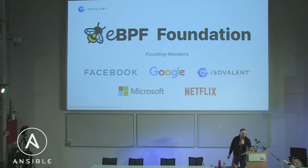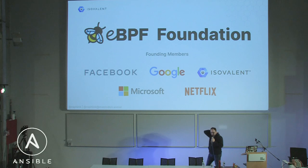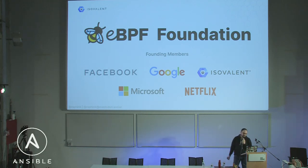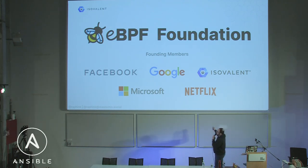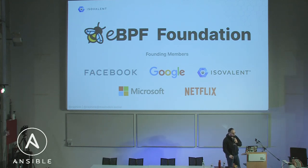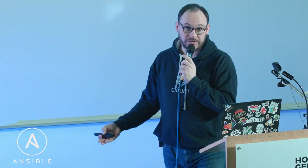eBPF was founded about 10 years ago, and the eBPF Foundation manages the technology in the Linux kernel. It was co-founded by Facebook, Google, Isovalent, Microsoft, and Netflix. There are more members added since then — these are just the founding members. The technology is still evolving, with additional features being added to eBPF to make more events available, or more helpers available to program eBPF functionalities.